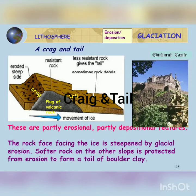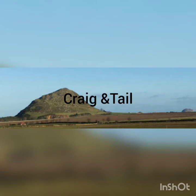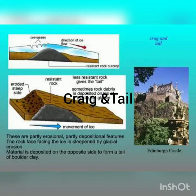Then comes crag and tail. These are partially erosional and depositional features. The rock face facing the ice is steepened by glacial erosion, and material is deposited on the opposite side to form a tail of boulder clay. So it's essentially the opposite of roche moutonnée, as is clear from the diagram and picture.